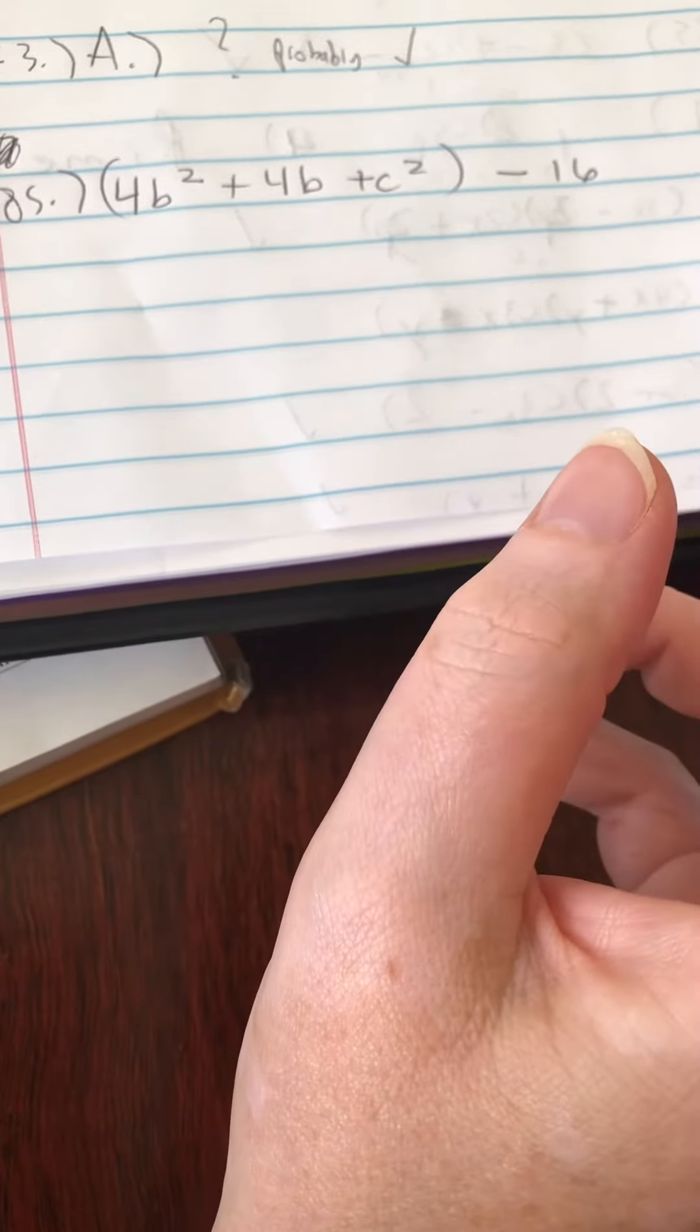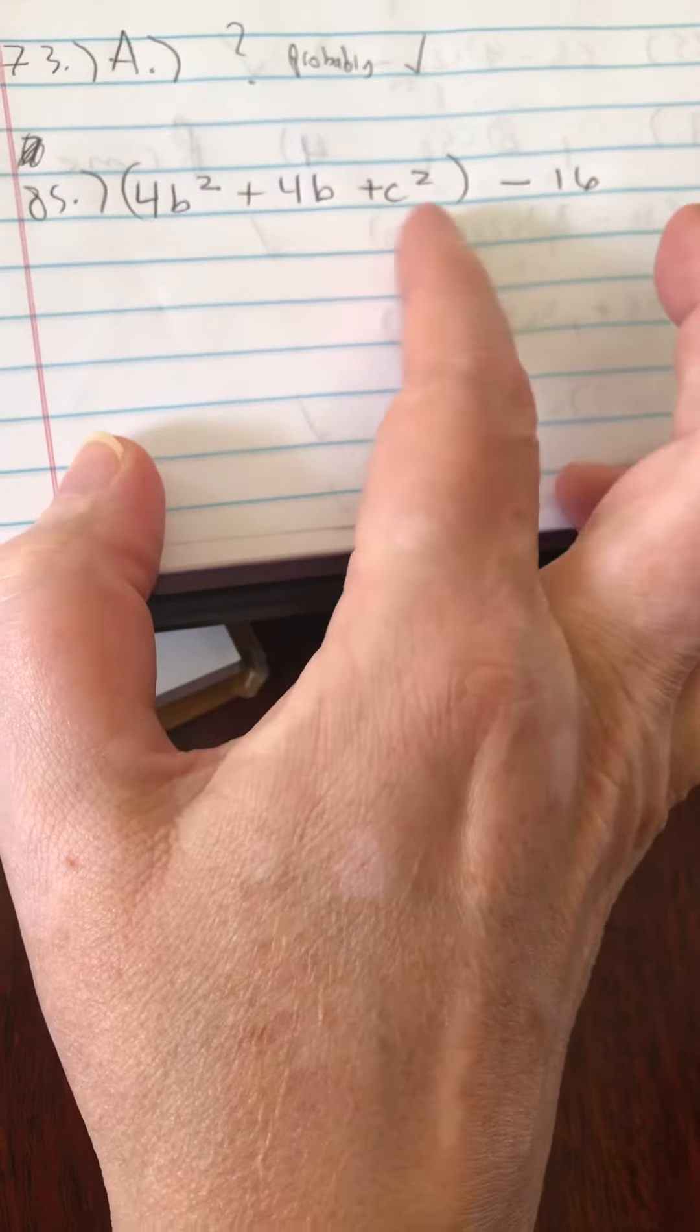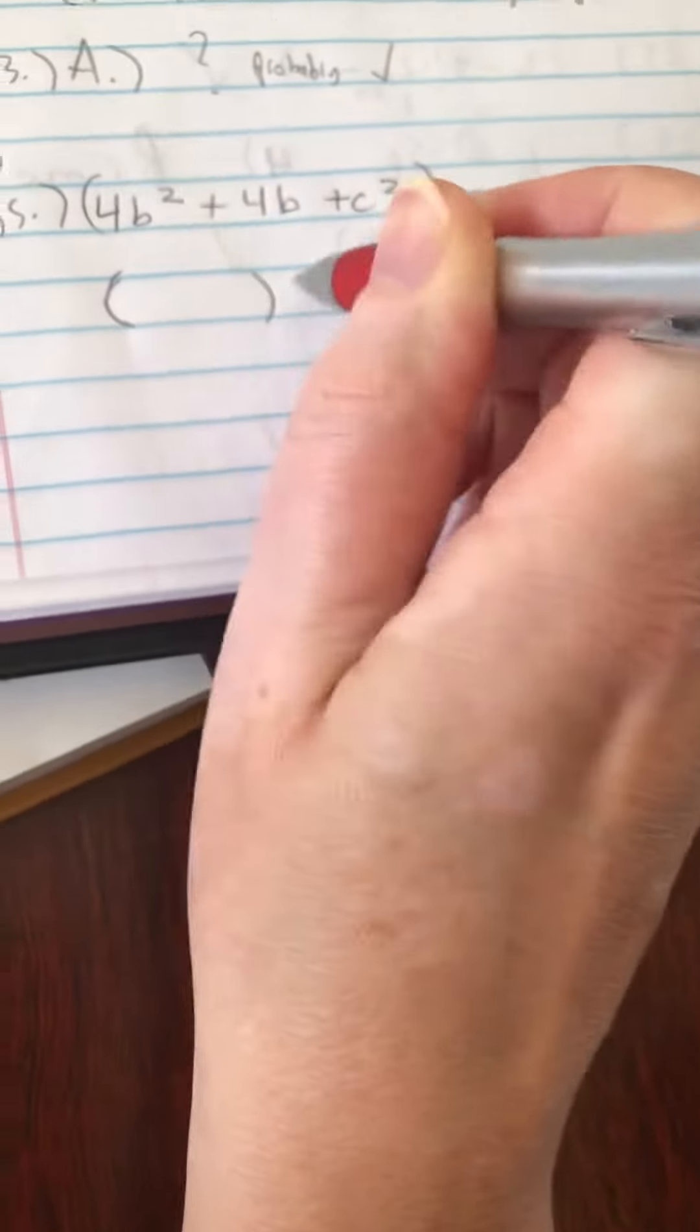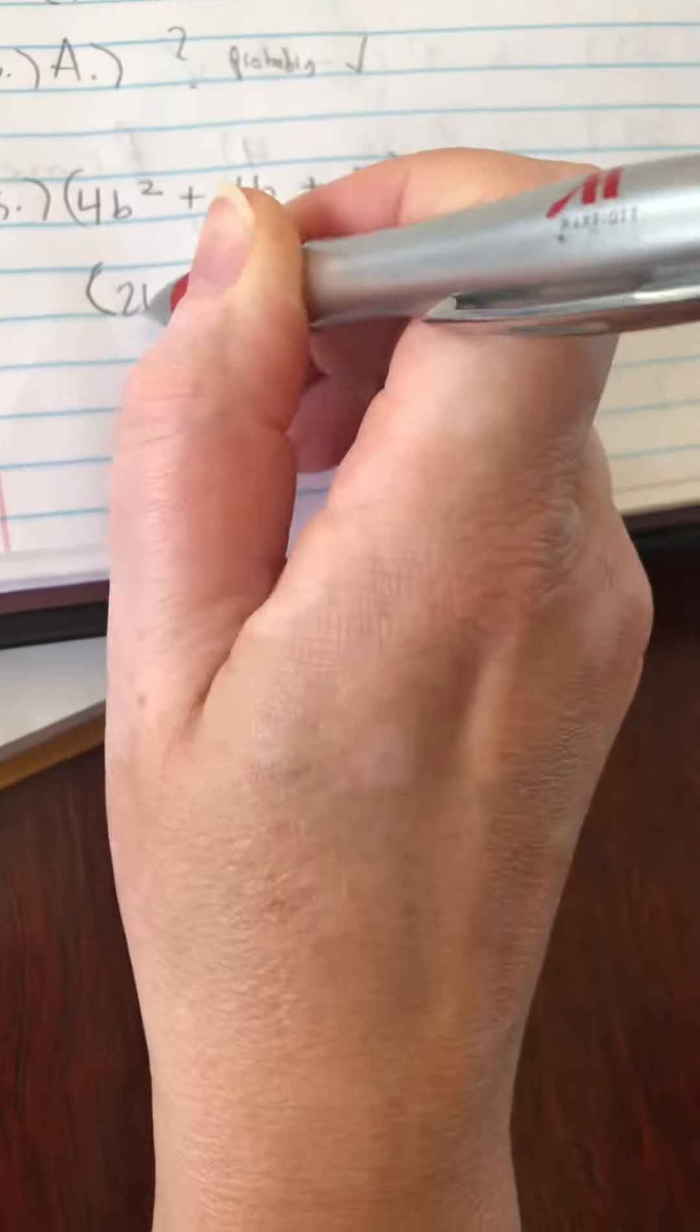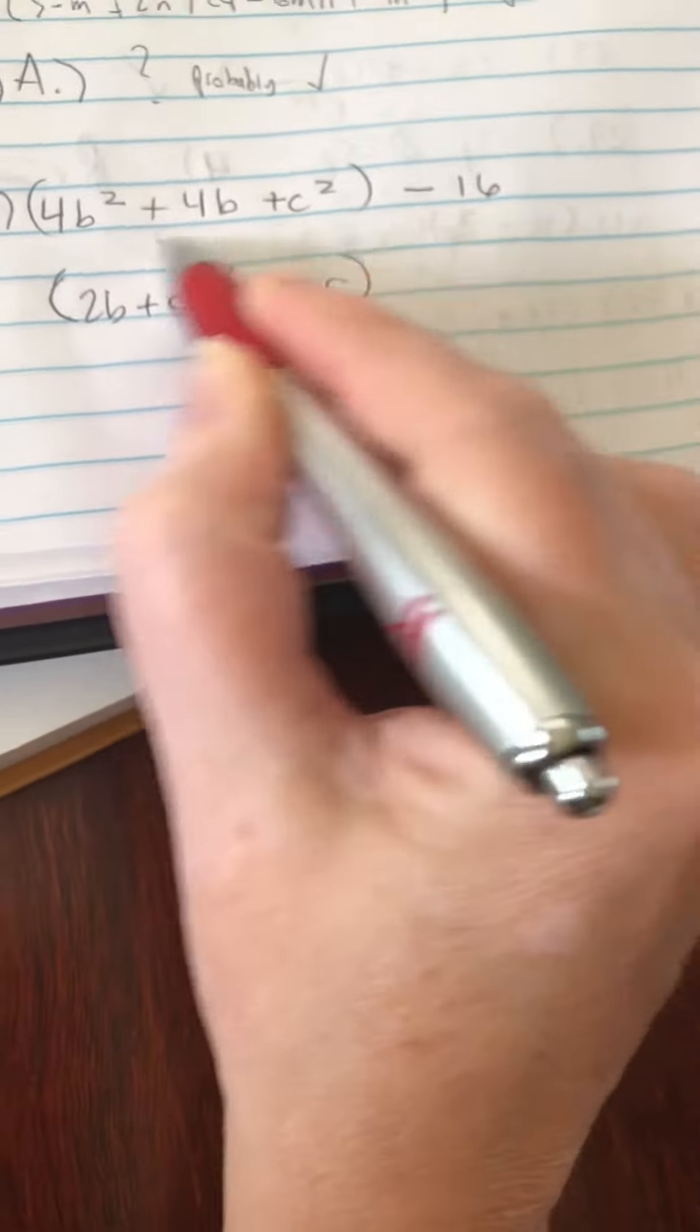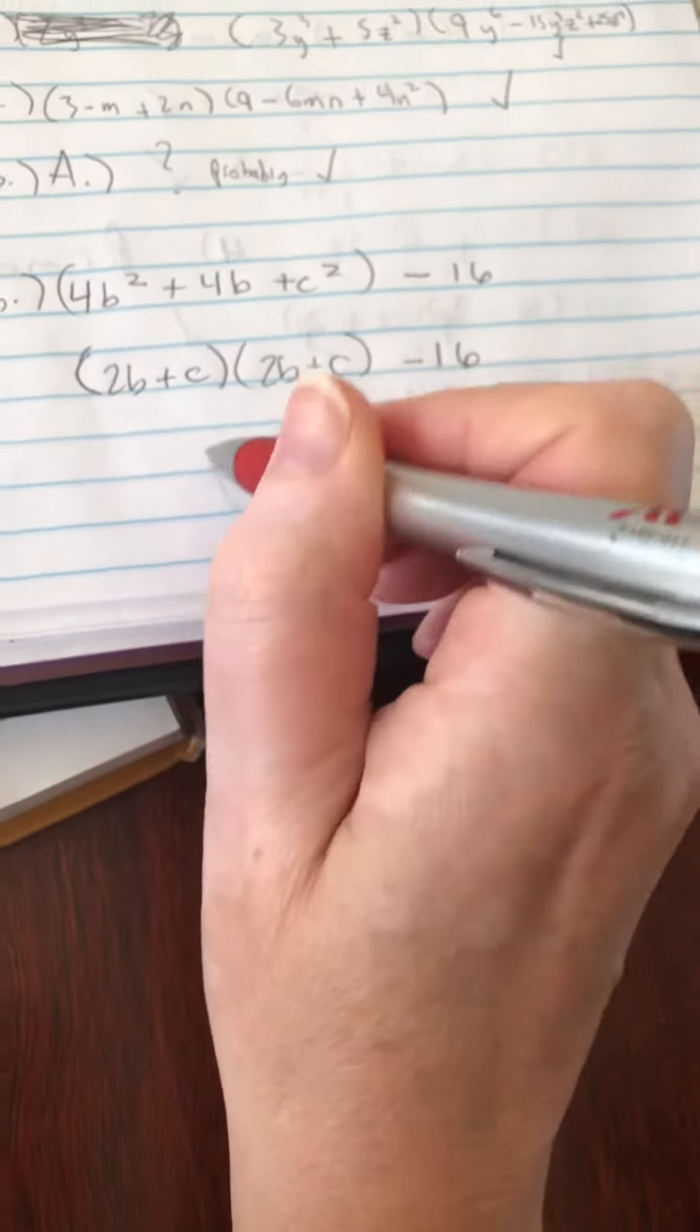So this is our other type of grouping and it's called the three and one grouping. If you factor this as a trinomial, factor it as a trinomial, to be 2b plus C times 2b plus C, that's how this factors. That's times itself.